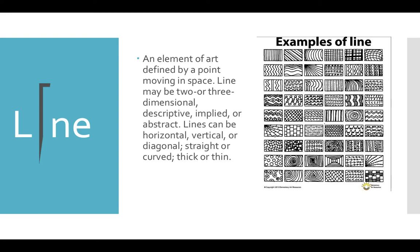The first element is line. It's usually the simplest element that we have. Lines can be merely just a point, or something more two or three dimensional. You can have lines that are very explicit or some that are implied. Lines can go in all sorts of directions — horizontal, vertical, diagonal, straight, or curved — and of course you can change whether they are thick or thin.